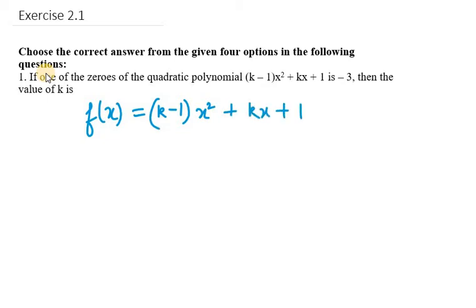Now what is given to us is that -3 is a zero of f(x). So that means the x value is -3 and the polynomial must be equal to 0 at that point. So -3 is x now.